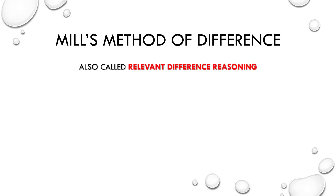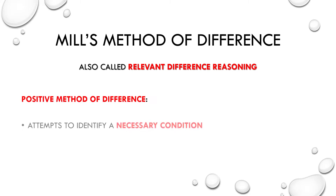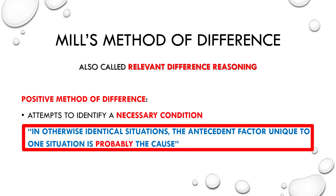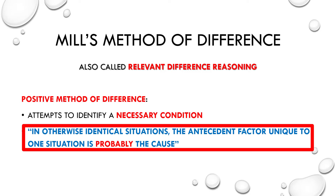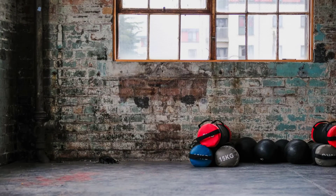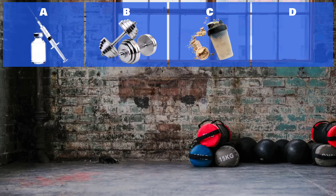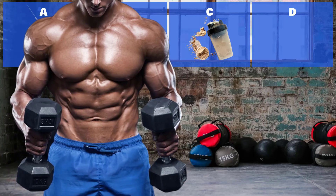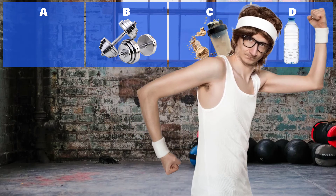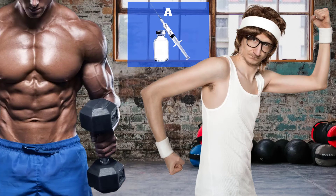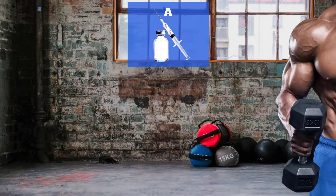Mill's method of difference is also called relevant difference reasoning, and again we have a positive and a negative version. The positive method of difference attempts to identify a necessary condition. The principle stated: in otherwise identical situations, the antecedent factor unique to one situation is probably the cause. If one instance where a phenomenon occurs and another where it does not have every element in common except one, that one is probably the cause. For example: instance one has A, B, C, and D and produces an effect; instance two has B, C, and D and the effect fails to occur. A is unique to instance one, so A is likely the cause. A helpful memory tip: in the method of agreement, the effect occurs in each instance — the results agree — while in the method of difference, the effect differs between the instances.